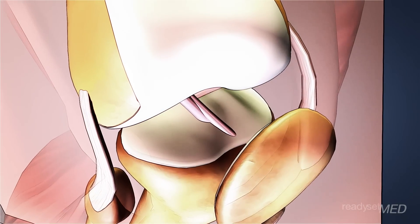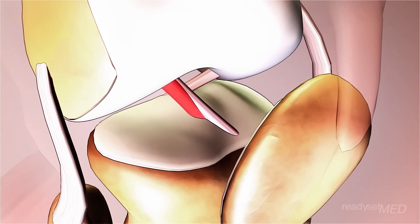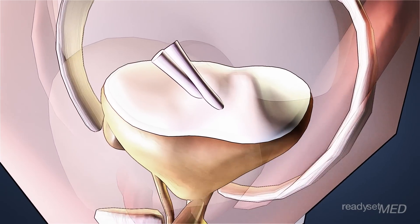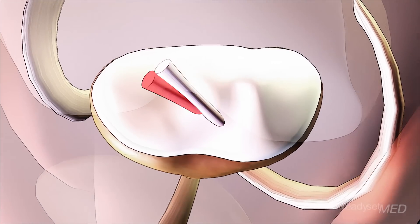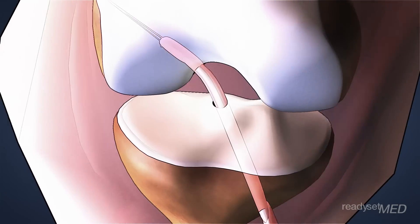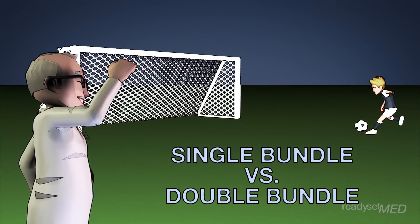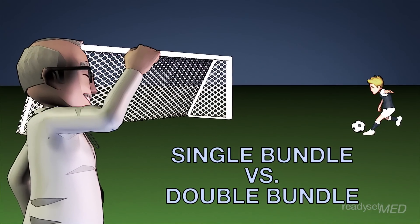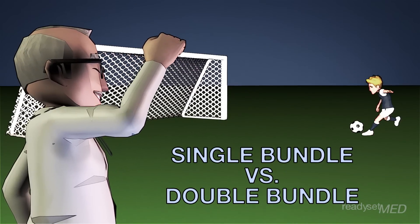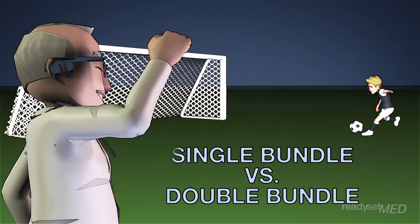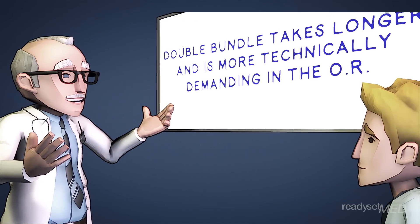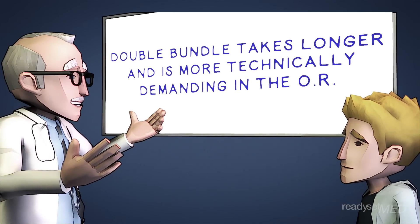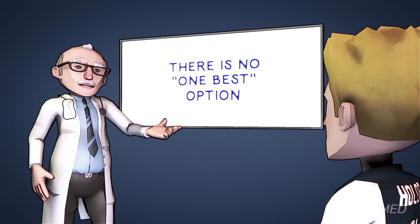Single bundle versus double bundle: the ACL is made up of two bundles that play slightly different roles throughout the knee's range of motion. Doctors have developed a technique to replace the two bundles separately, as opposed to the more common single bundle approach. Several years of research have gone into figuring out if there is an advantage to one method versus the other, and the clinical results have been found to be nearly the same, with both methods having excellent results. It's important to note that the double bundle technique is more technically demanding and time-consuming, so it's important that your surgeon has plenty of experience with it.